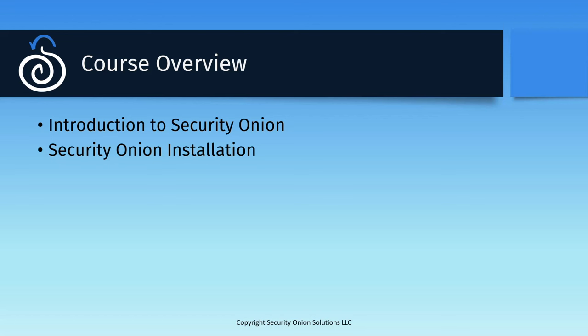Next, we'll discuss the installation process for Security Onion. In this training, we'll be installing an evaluation node, which is a very basic version of the platform intended for trying out its capabilities. The same installation and deployment methodology applies to the more robust architectures as well, so the experience you get here will be useful for planning a home or enterprise deployment.